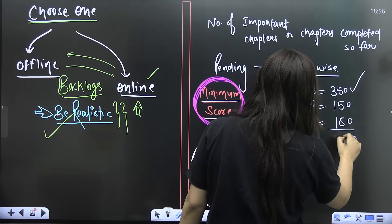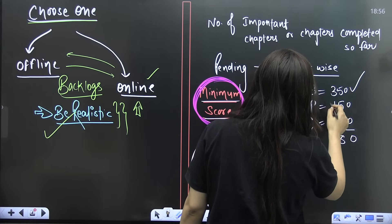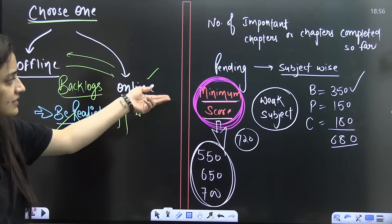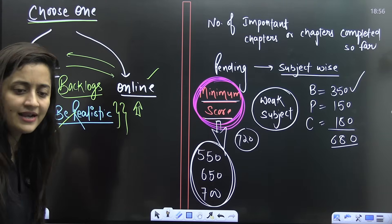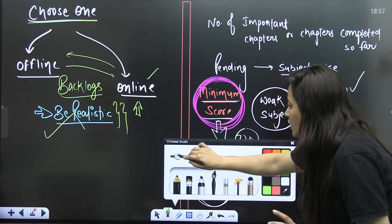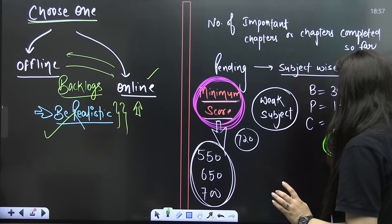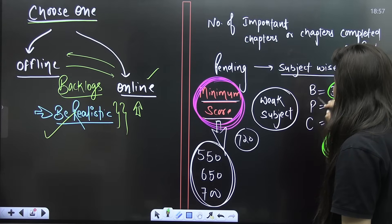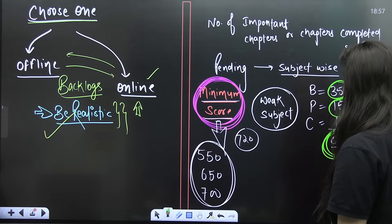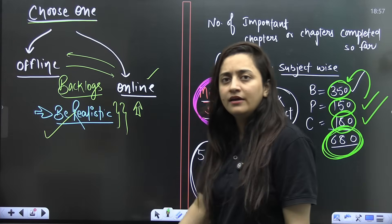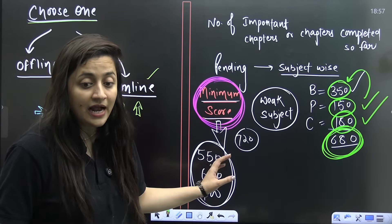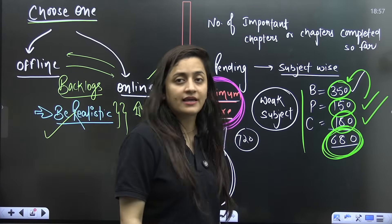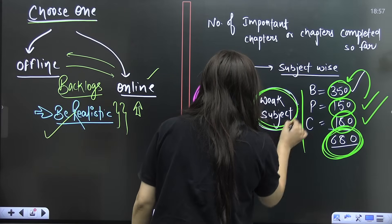Once you decide your minimum score, say 680, you know you'll target 315 in biology, 150 in physics since it's not your strongest, and 180 in chemistry if that's good. That's what you have to plan. After deciding your minimum score, clarify which subjects are not working well for you — whether you have a weak subject, a weak chapter, or a weak topic.